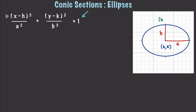The top point is going to be (h, k plus b). The point on the left is (h minus a, k). The bottom point is (h, k minus b). And the point on the far right is (h plus a, k). So there is our ellipse and how it lines up with the standard form.